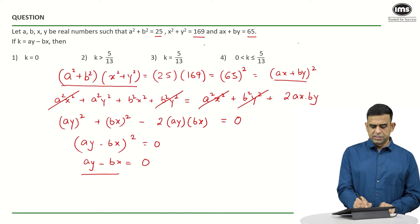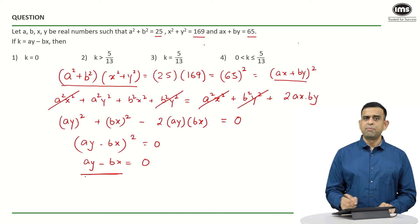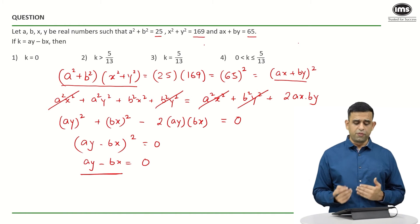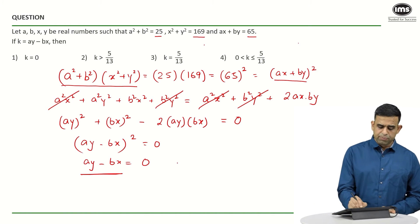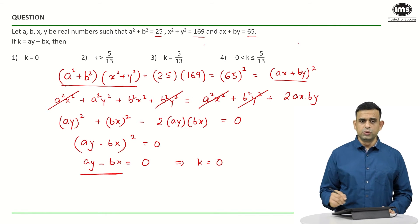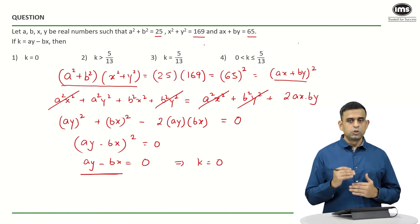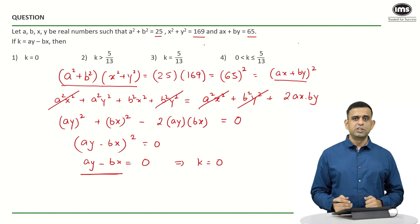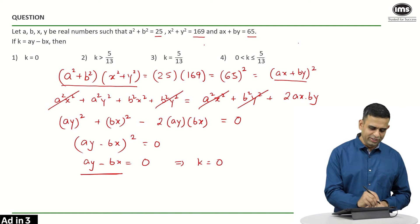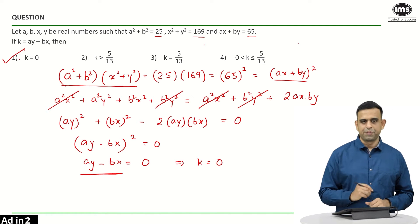Since (ay − bx)² = 0, it simply means ay − bx = 0. And this term ay − bx is nothing but the value of k, which implies k = 0. So the answer for this question is option number 1.